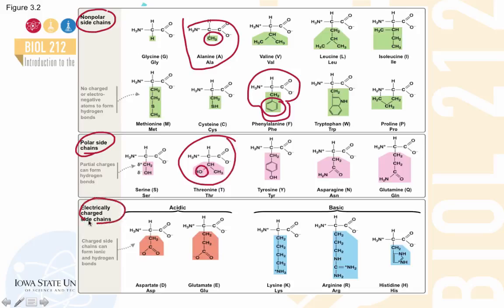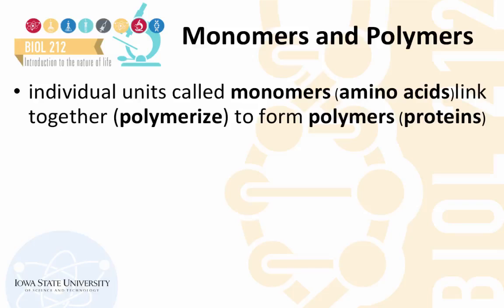Next, there are the electrically charged side chains, which can either be acidic or basic. The acidic side chains contain functional groups that are negatively charged, whereas the basic side chains contain functional groups that are positively charged. For example, lysine has a net positive charge because the nitrogen has taken up a proton.